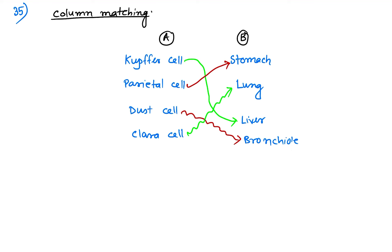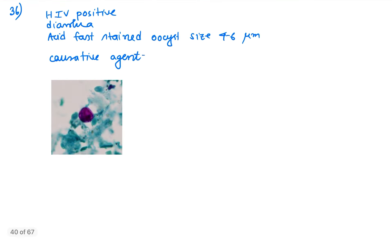Coming to question number 36: HIV positive patient presenting with diarrhea, acid-fast bacilli present, what is the causative agent? This is cyclospora. The answer is cyclospora.